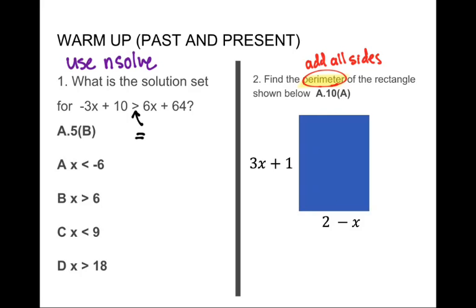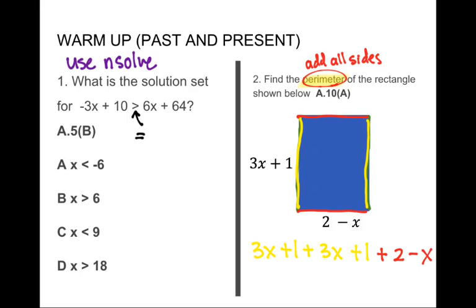For number two, recall that in a rectangle opposite sides are equal. So this side and this side are both the same, and this side and this side are both the same. I can set this up as (3x + 1) + (3x + 1) + (2 − x) + (2 − x), and we'll use combining like terms to find the perimeter.